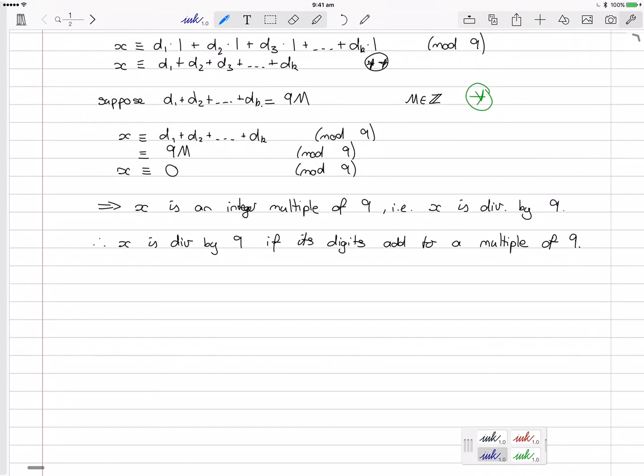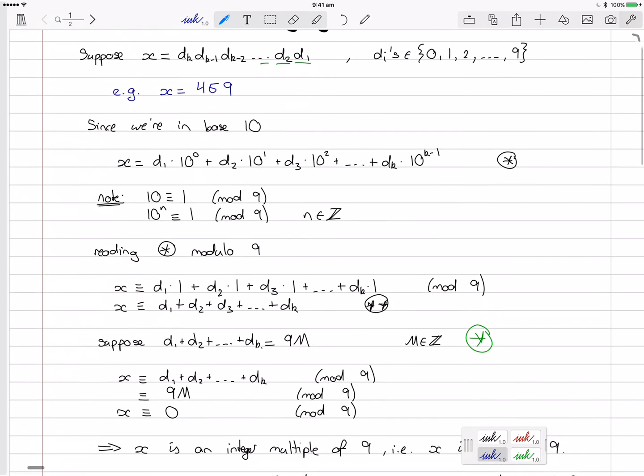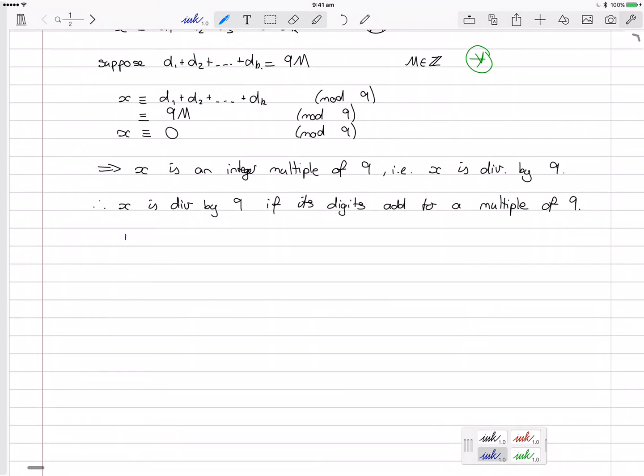What was the number we had up above? x equal to 459. So 459, let's call this x1. If we add up the digits, 4 plus 5 plus 9, 4 plus 5 is 9 plus 9 is 18, that's a multiple of 9. So this number is divisible by 9. So this number is divisible by 9. So therefore x1 is divisible by 9. Good.